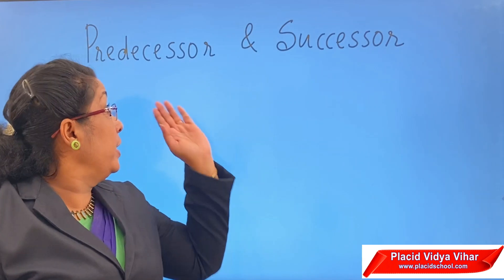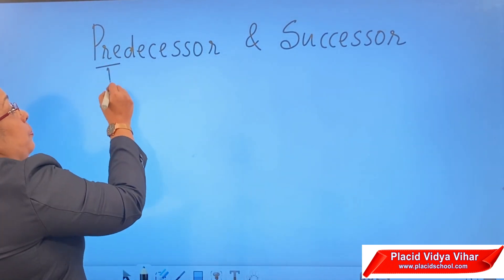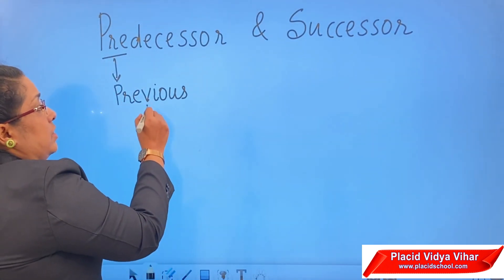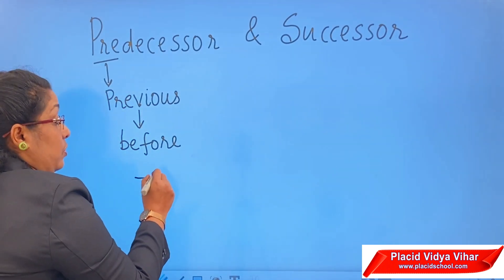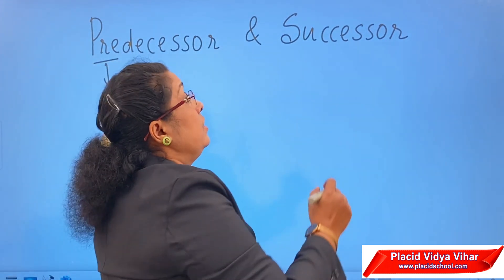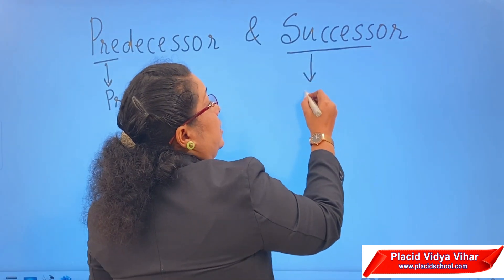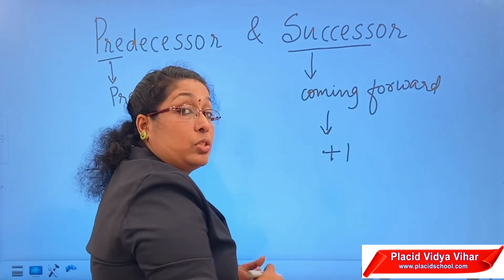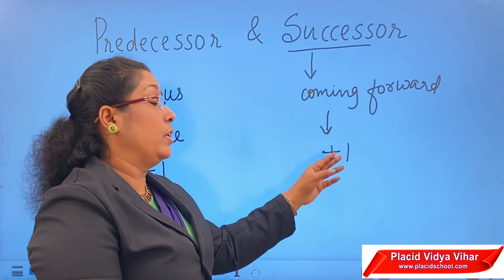Now let us move to predecessor and successor. Predecessor's 'pre' stands for previous, that means before. So to find the predecessor of a number, we subtract 1 from the given number. Similarly, successor means coming forward, so we add 1 to the given number. For finding predecessor, subtract 1; for finding successor, add 1.